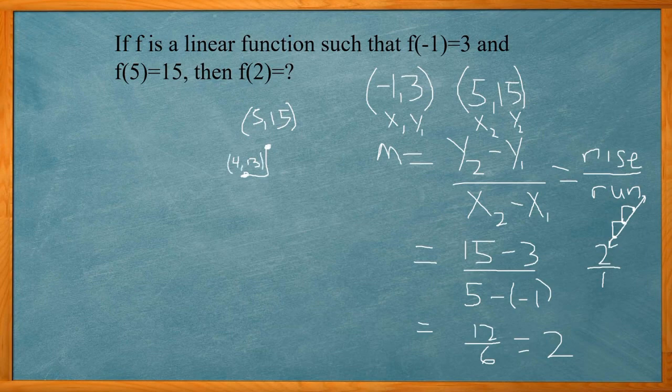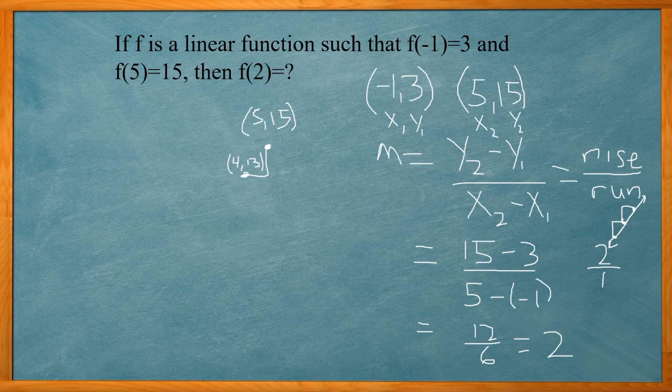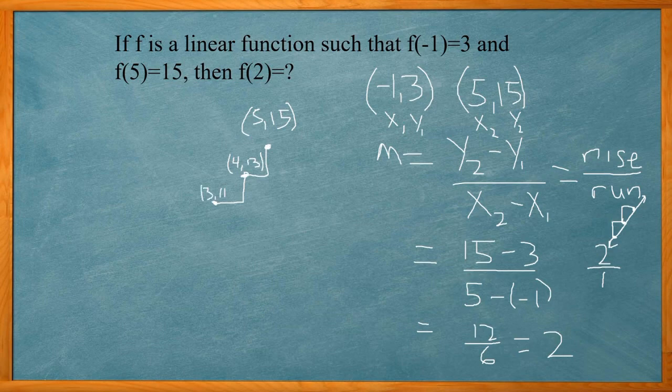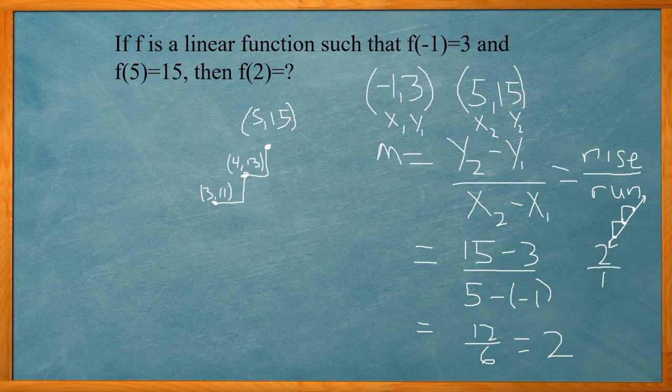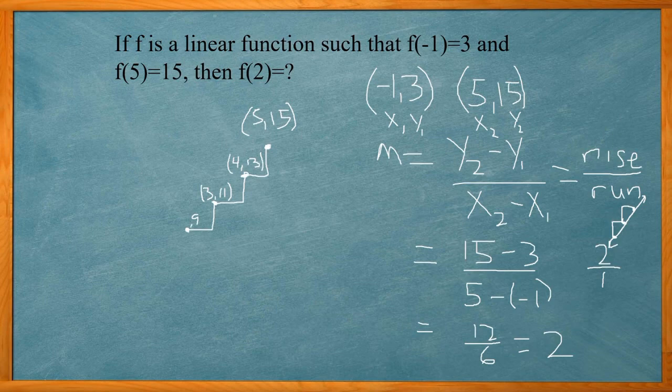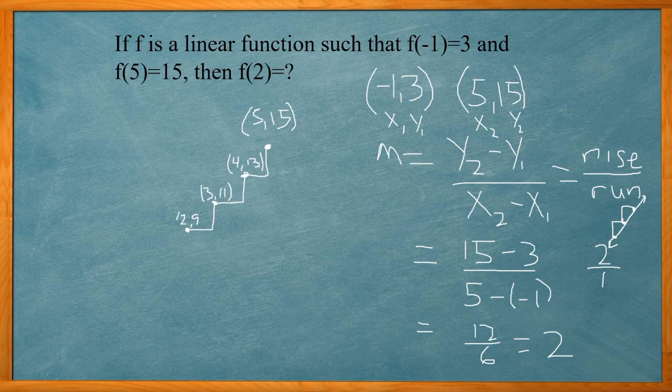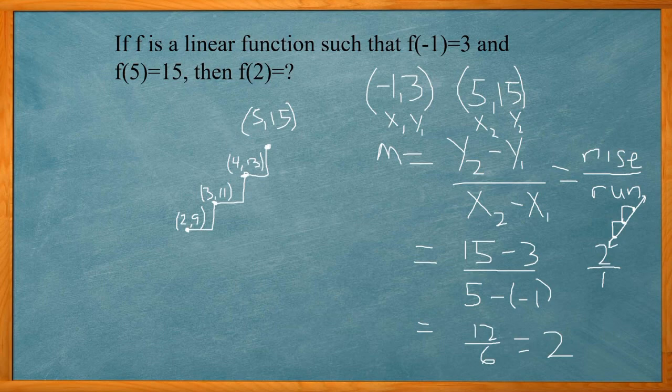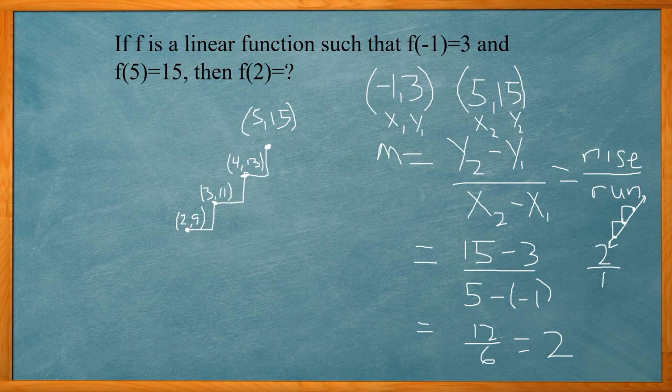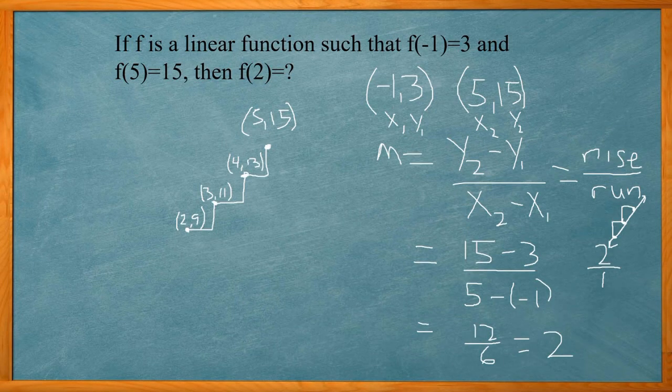That's the next point to the left. I'm going to do the same thing. I'm going to go down 2 over 1. And that's going to give me 11 for the y and 3 for the x. If I can do it one more time, down 2 over 1. That's going to give me 9 for the y and 2 for the x. So just using the slope alone, I can go in reverse and find out when my x is 2, y equals 9. So the answer here would be f of 2 equals 9.